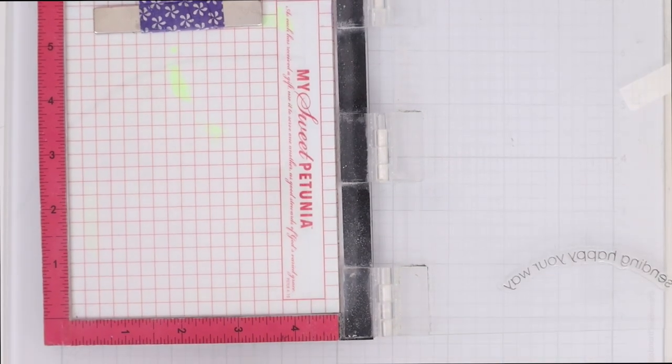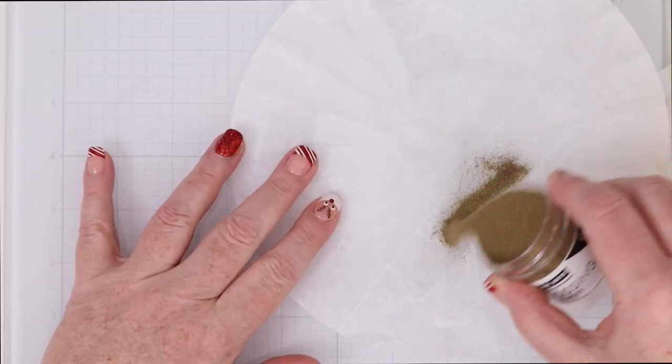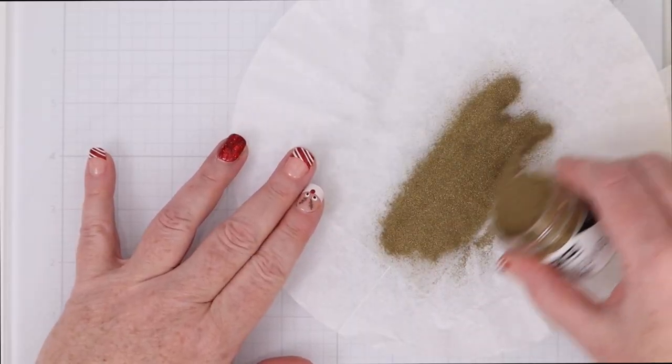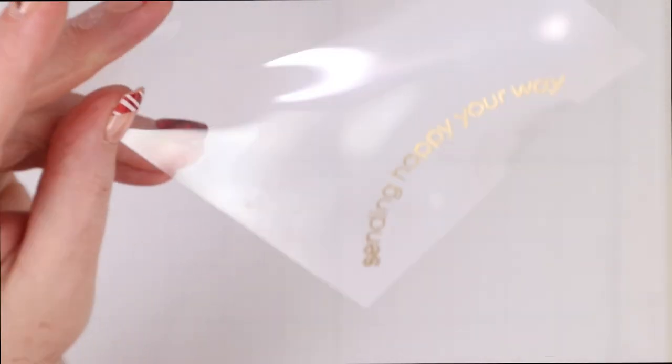They have some great curved sentiments in the stamp set as well so I am going to stamp and heat emboss one of those sentiments on some more embossable window plastic this way I can emboss the sentiment with the same gold embossing powder that I used as the outline for the rainbow and this way everything will match and will all come together.